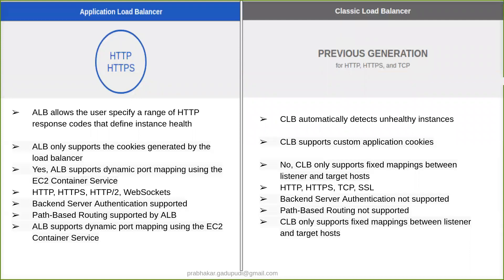The main difference between the Application Load Balancer and the Classic Load Balancer — both will seem to be the same. Application Load Balancer actually allows user-specific range of HTTP response codes that define the instance health. So based on the HTTP response code, like if I access any URL from any EC2 instance and it gives a response code of 200 or 2xx response codes, then the Application Load Balancer will determine that your EC2 instance is healthy.